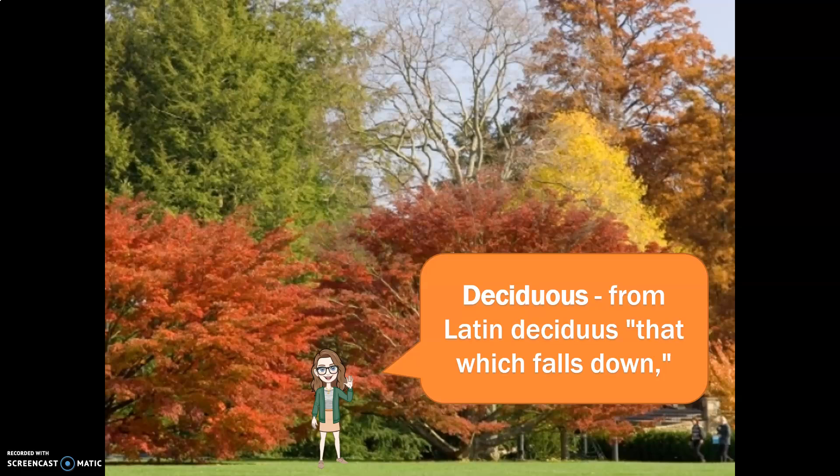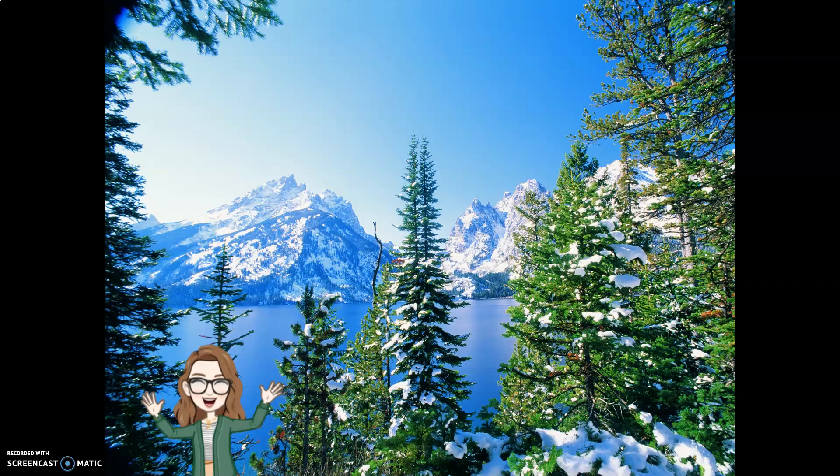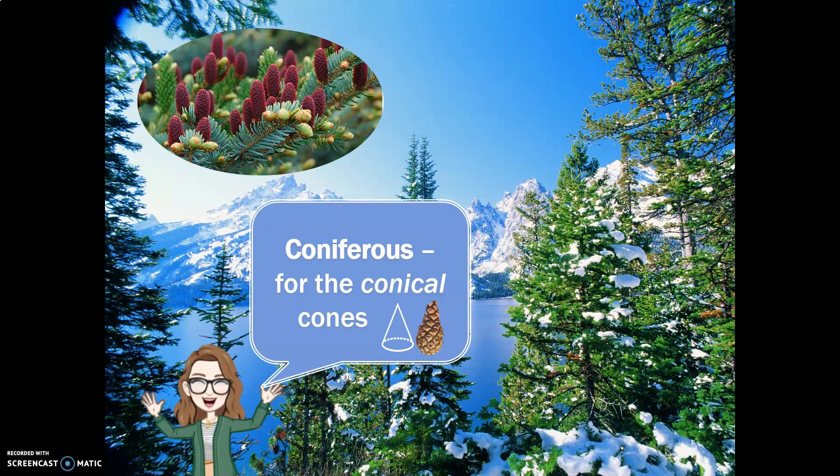Now compare that to a beautiful Scandinavian northern kind of idyll. In this kind of landscape you're more likely to see tall, needle-like trees reaching for the little bit of light that's available, often covered in snow. These types of trees are called coniferous trees, named for the conical cones — cone, conical, coniferous. So these are cone-bearing trees and they are known as coniferous.